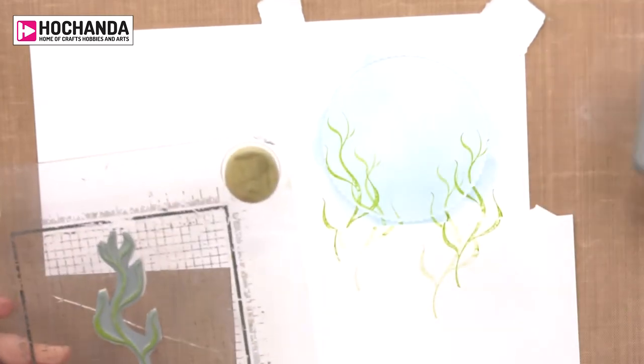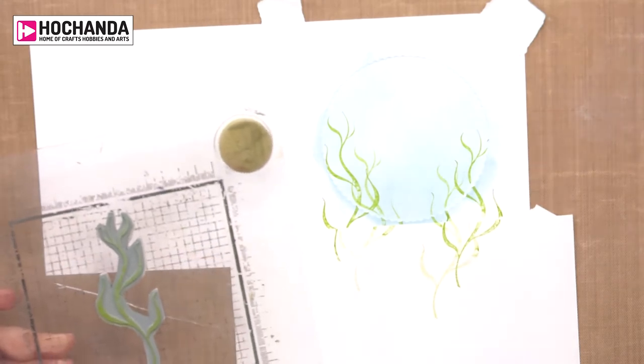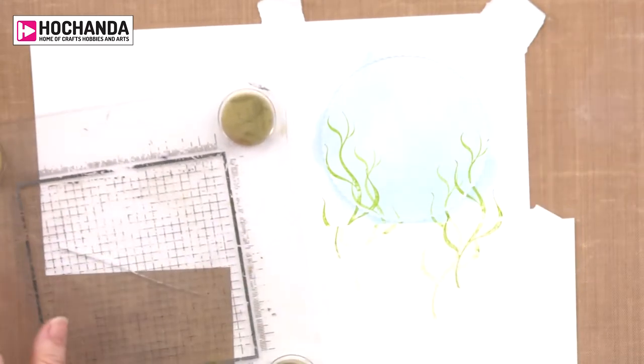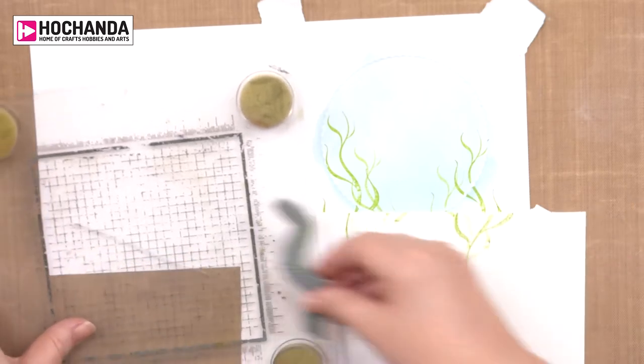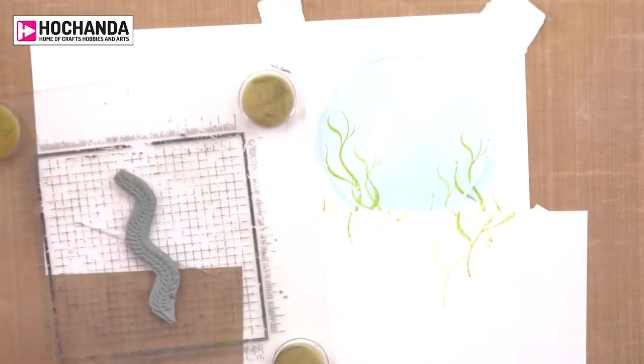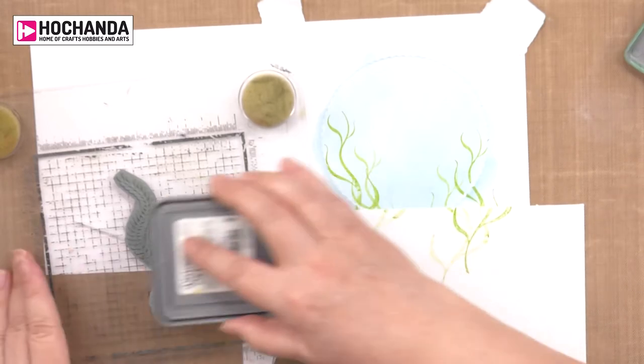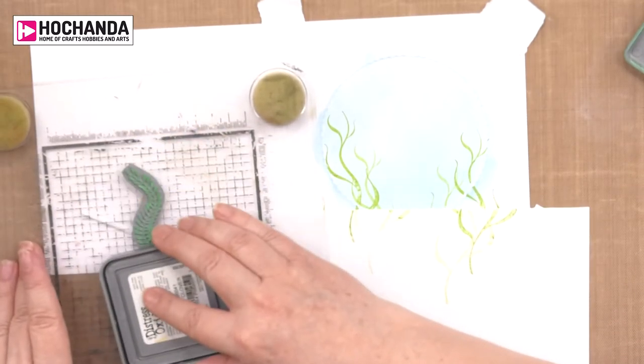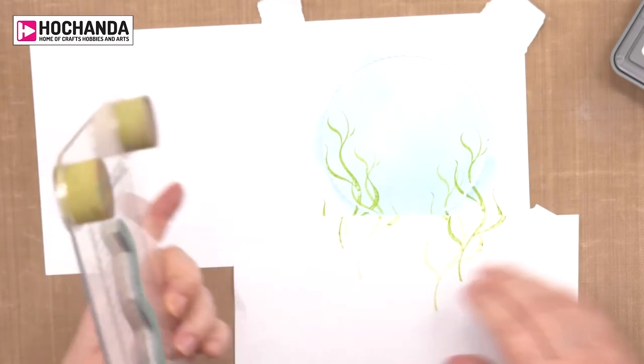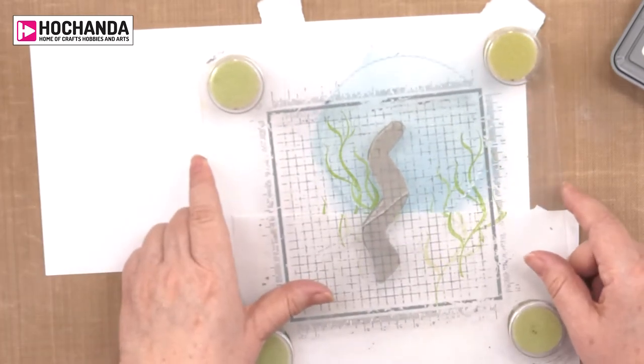In the set you do get two seaweed so we can switch out to the other one. Maybe a darker green so we can give it some depth.